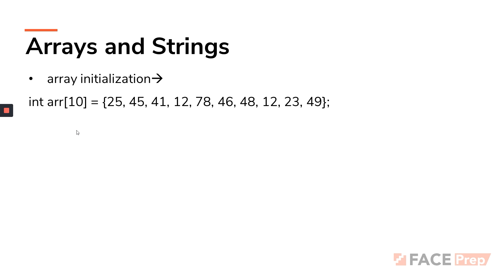Once you've declared an array, how do you initialize it? Let's say I give int arr[10] — that means I've got 10 vacant places for my integer values to be filled. I'll be filling them with values like 25, 45, 41, 12, 78, 46, and so on till 49. This is called initialization — inside the 10 variables I've created, I'm inserting values inside brace brackets. This is called array initialization.